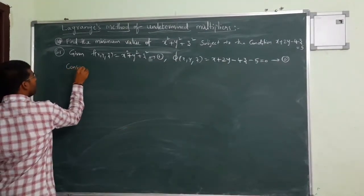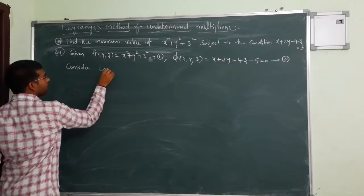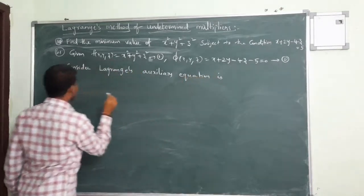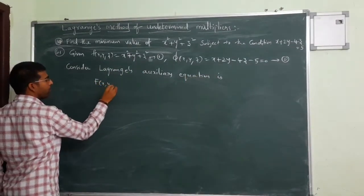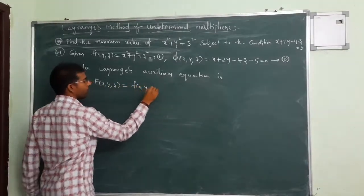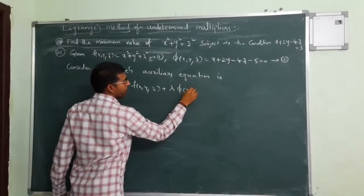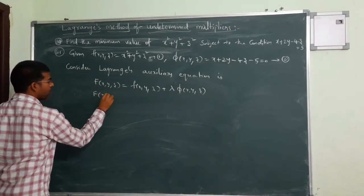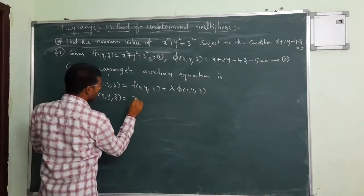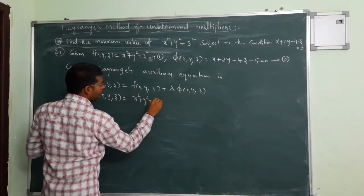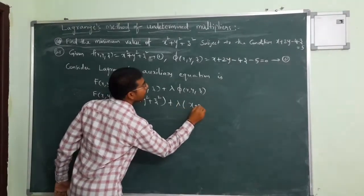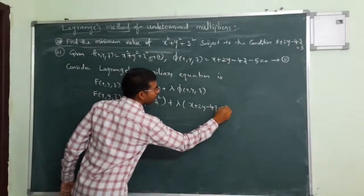Now, what we have to do in the first step? Consider Lagrange's auxiliary equation. The auxiliary equation is: capital F is equal to small f plus lambda into phi of x, y, z. Now substitute the values. Therefore, capital F is x squared plus y squared plus z squared plus lambda into x plus 2y minus 4z minus 5.